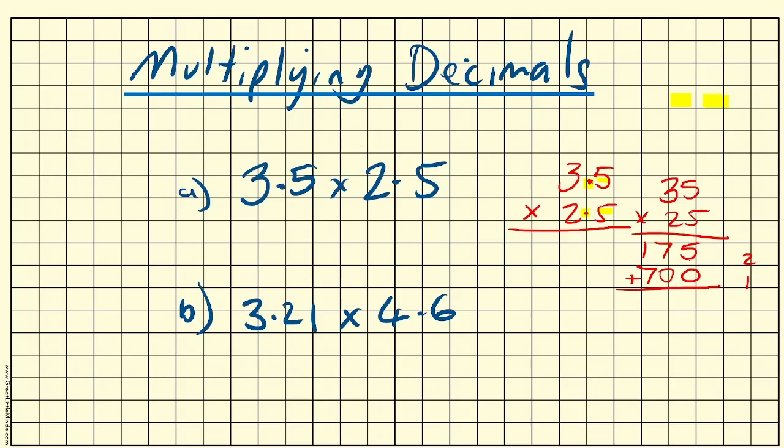We just need to add this column up now. 5 and 0 is 5, 7 and 0 is 7, and 1 and 7 gives me 8. So my answer will be 875 if this was 35 multiplied by 25.